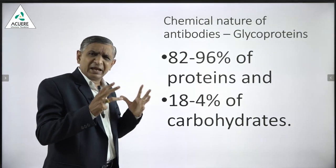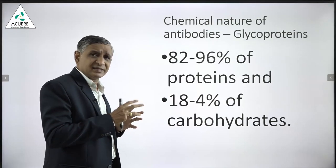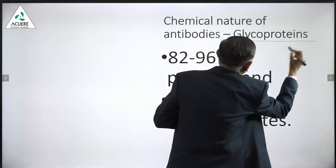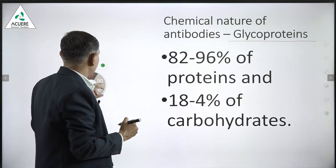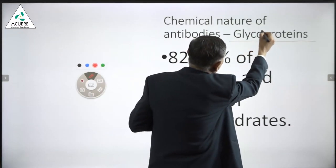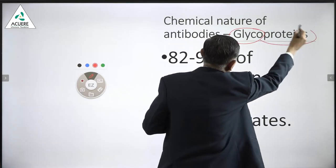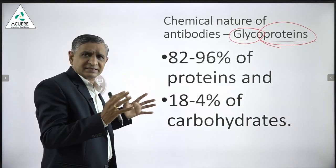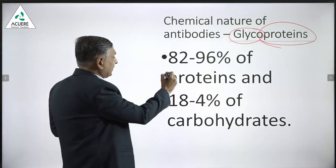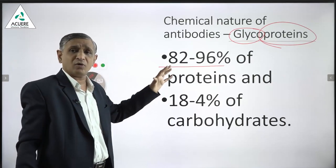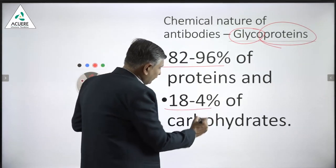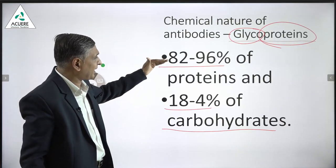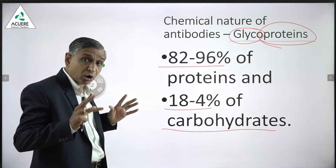What is the chemical nature of antibodies? It is an immunoglobulin, but more specifically it is a glycoprotein — glyco indicating a carbohydrate portion combined with protein. Analysis shows antibodies contain about 82 to 96% protein and 4 to 18% carbohydrates.